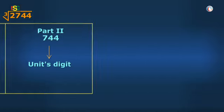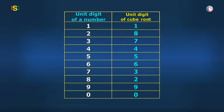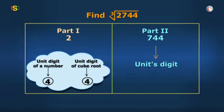Then, watching the chart, the perfect cube ending with digit 4 has cube root with unit digit as 4 itself. Or, unit digit of our cube root is surely 4.